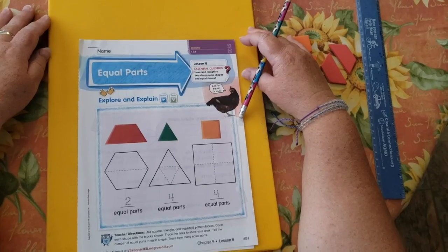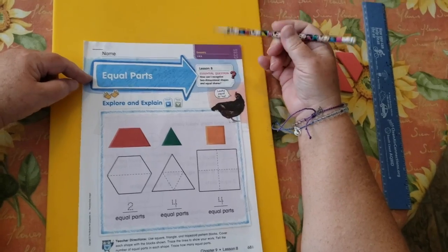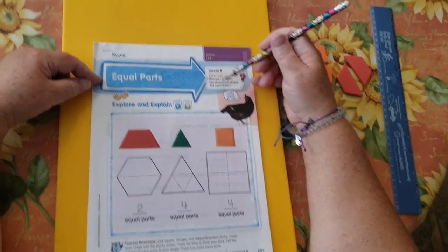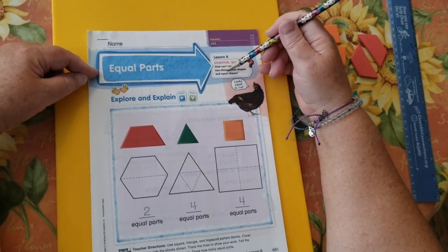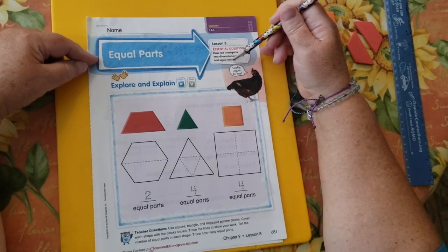And your page 681 from your math book. Okay, let's get ready to learn. Okay, so our lesson is on equal parts, lesson 8. The essential question, how can I recognize two dimensional shapes and equal shares? We're finally to that part of the question, the equal shares.